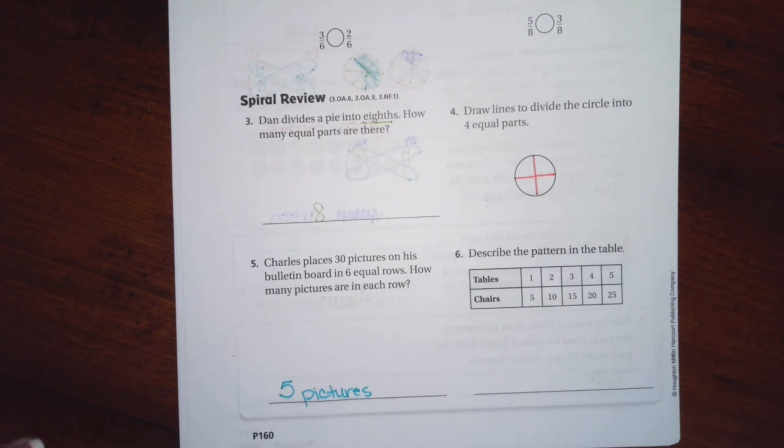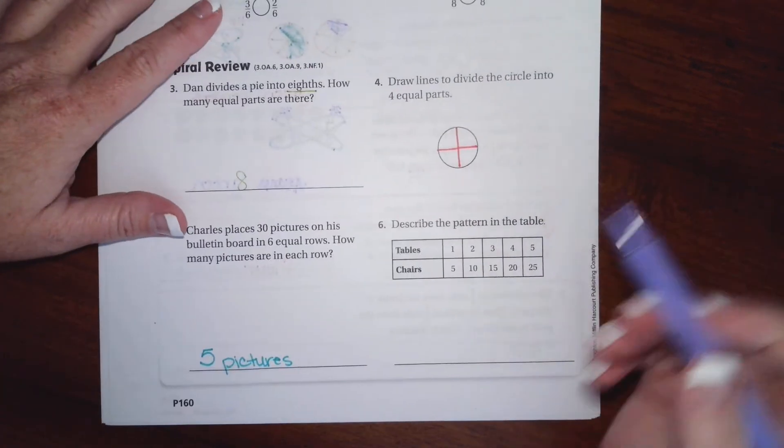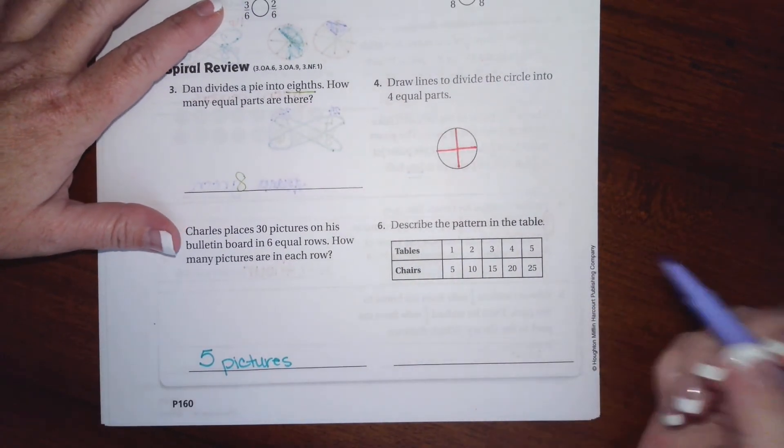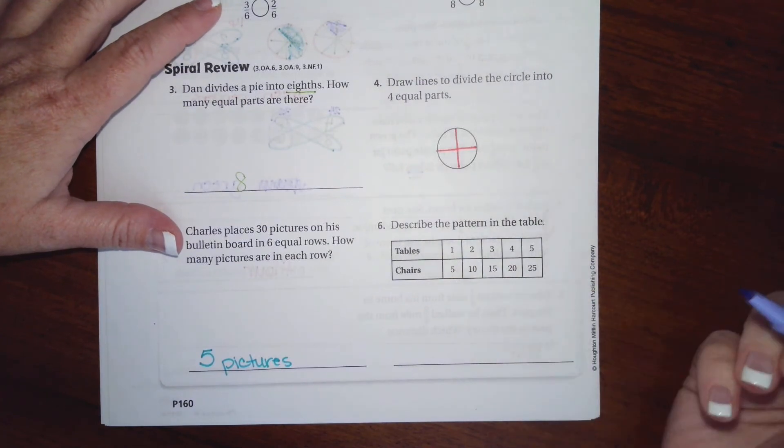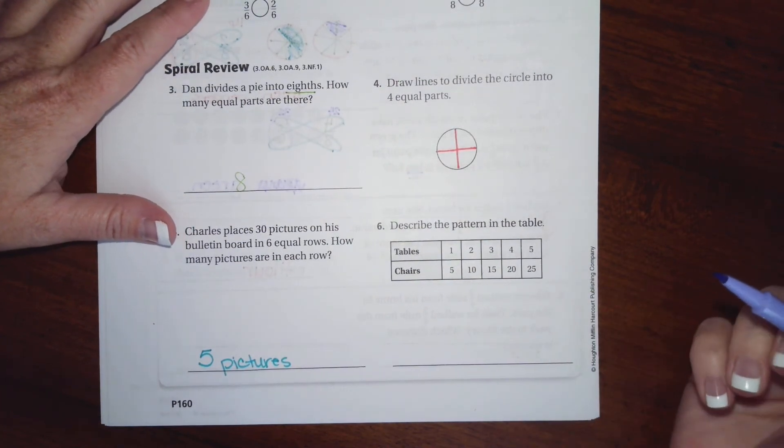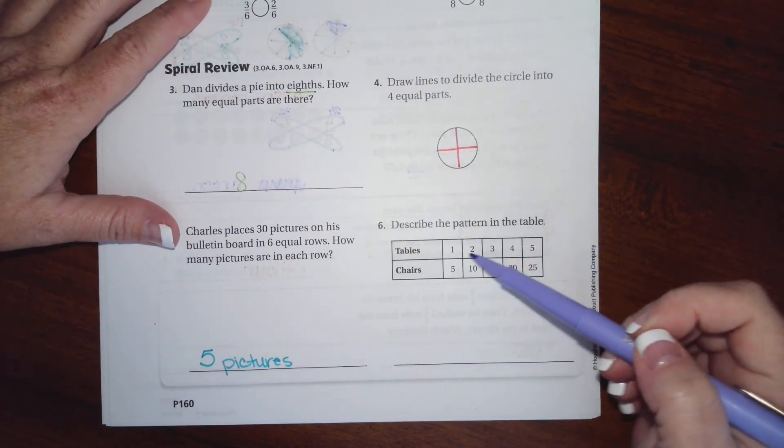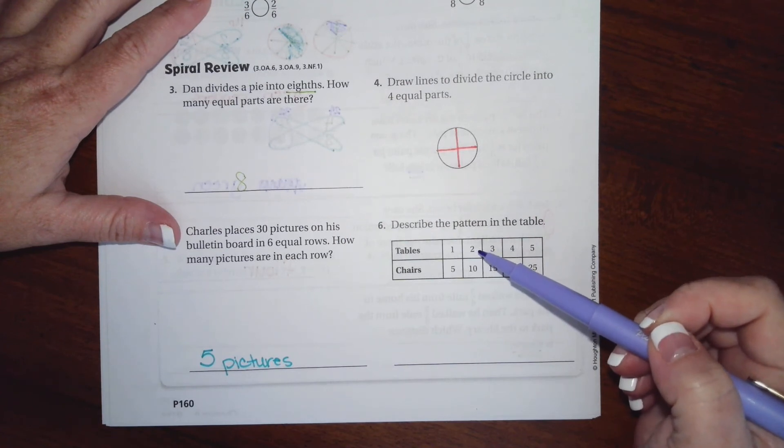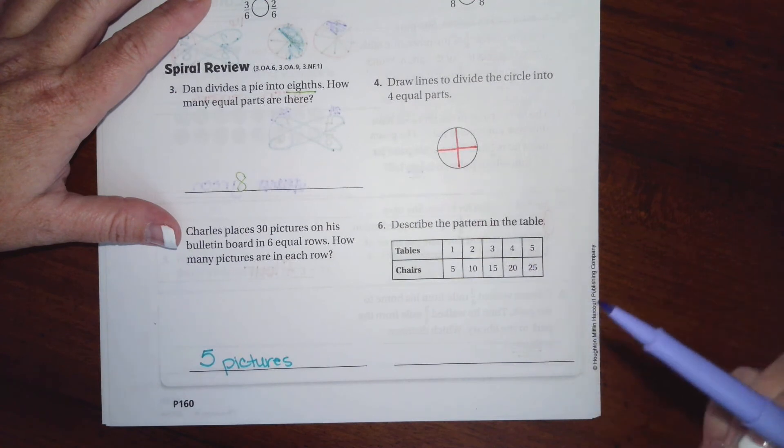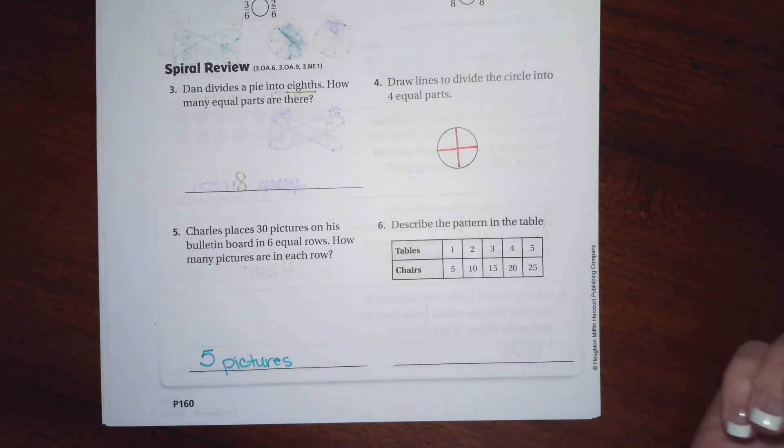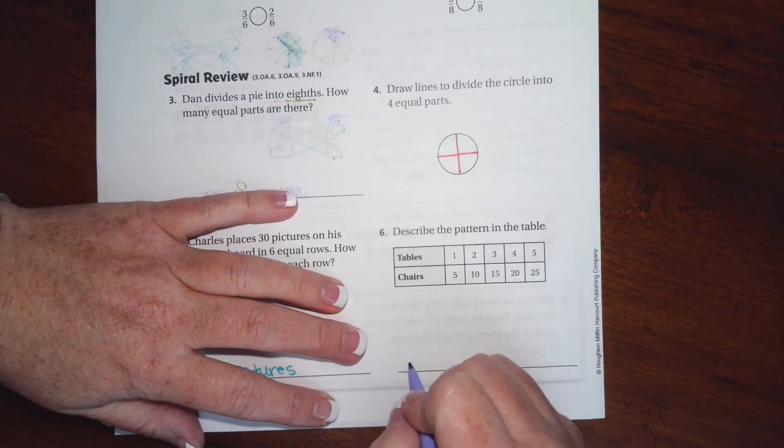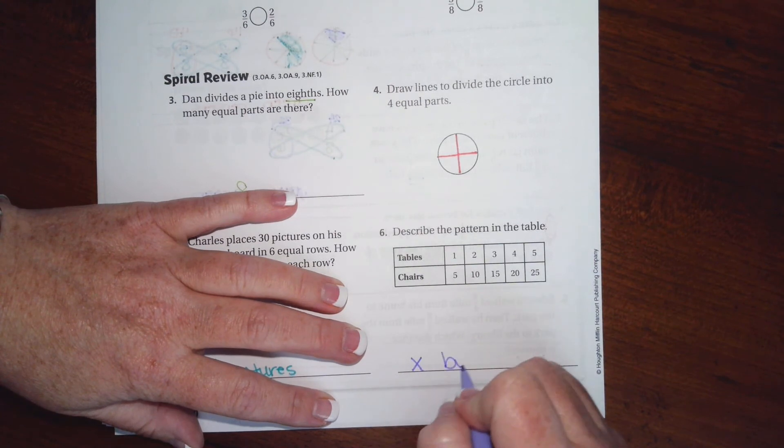Now, we need to describe the pattern on the table. How do we get from 1 to 5? We can add 4 or we can multiply by 5. So let's try this. 2 plus 4, well, that's only 6. So that's not going to get us through. But if we multiply by 5, then we got it. So we are multiplying by 5.